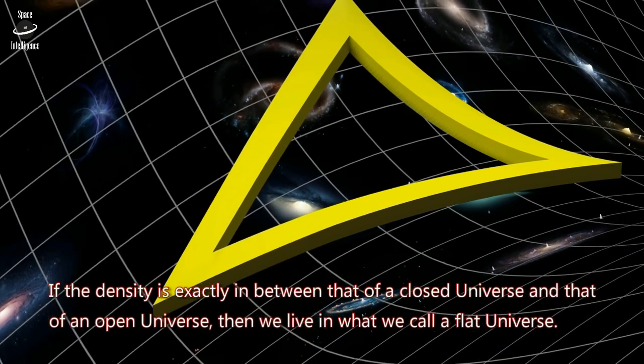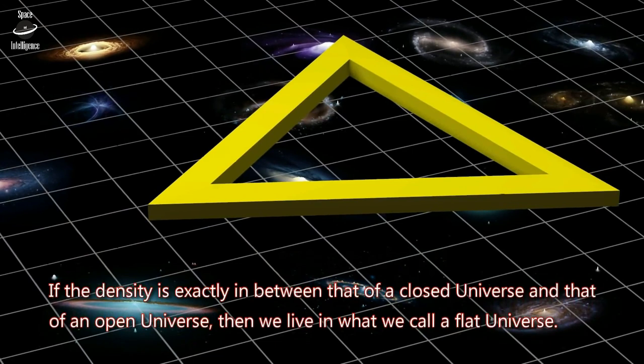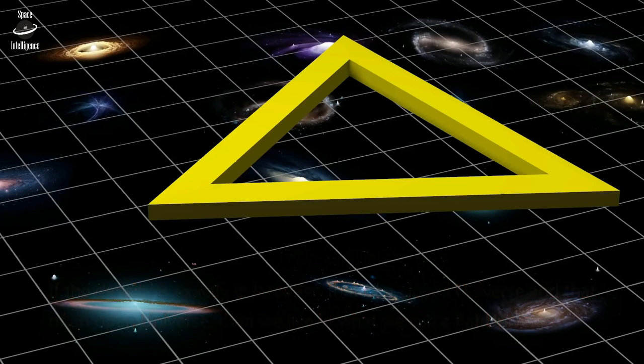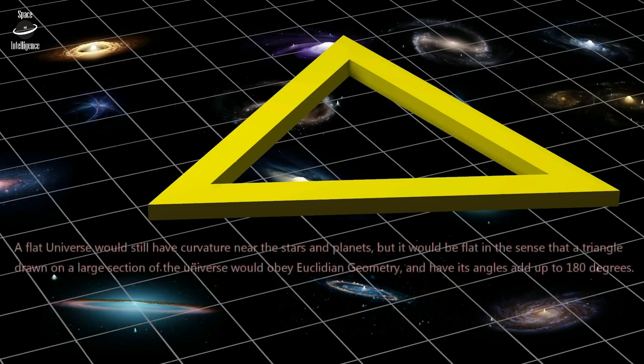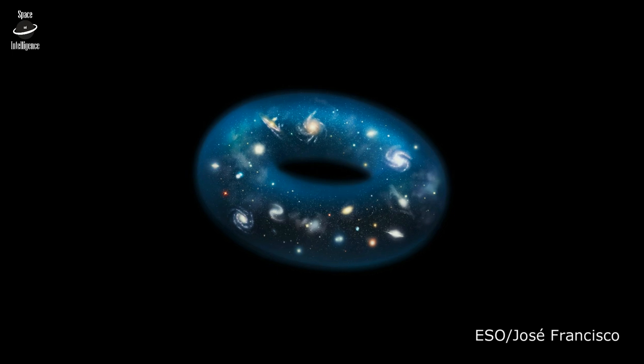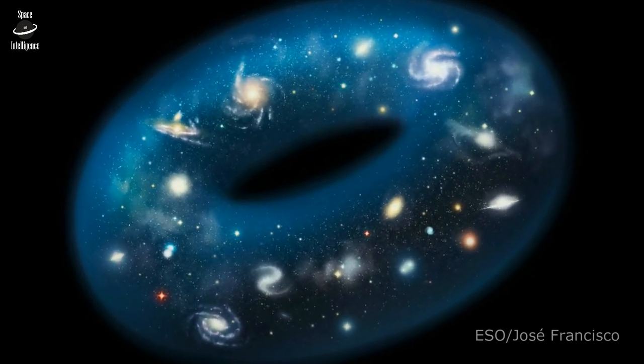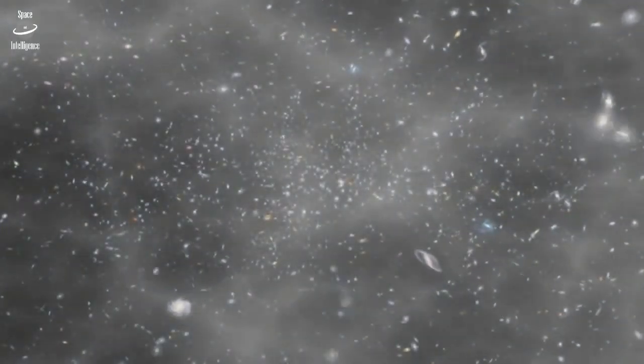One way of phrasing this flatness problem is that at about one second after what we call the Big Bang, the universe had to have a relationship between its mass density and its expansion rate which held to 15 decimal places, which means that if you tell me what expansion rate you're talking about, I can tell you what the density is to 15 decimal places. That's rather extraordinary. The conventional Big Bang theory required this precise equality to get to where we are today, but there was nothing in it to explain how we got to that situation. It seemed like a tremendous mystery.